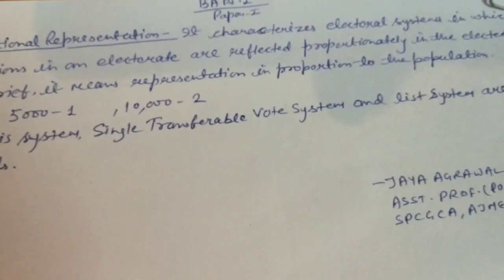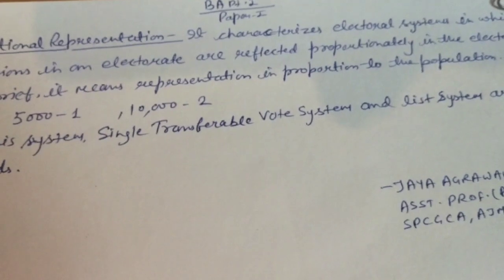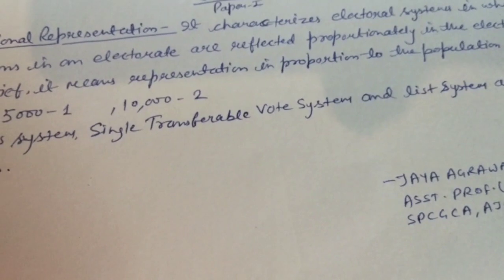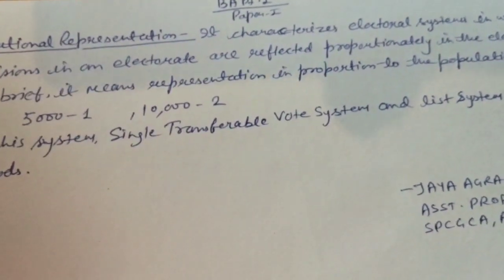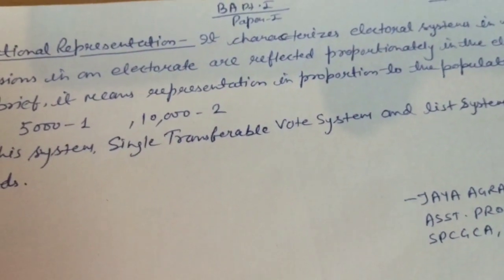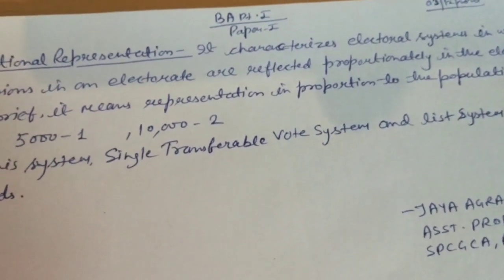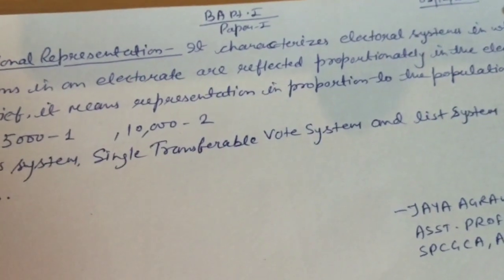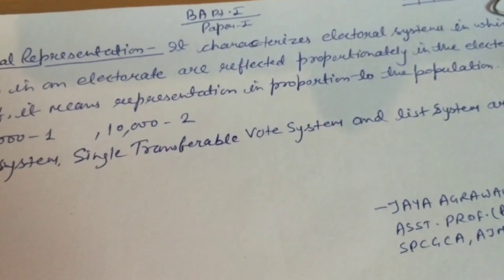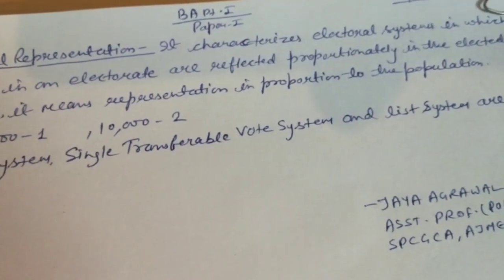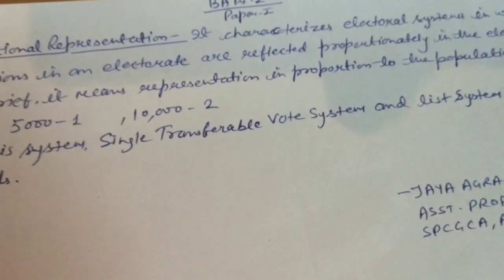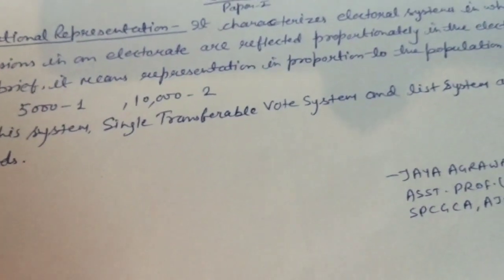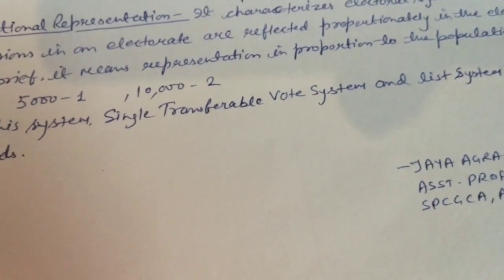Some features of the Single Transferable Vote system are: first, a multi-member constituency is a must; second, possession by the voter of only one vote; and third, making preferences by the voter. Regarding the transfer of votes and electoral quota, generally two methods are followed to determine the quota. The first is: total number of votes divided by number of members to be elected. The second is: total number of votes multiplied by one, divided by number of members to be elected plus one.